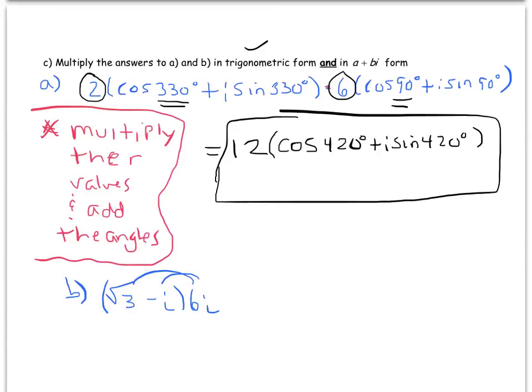So we get 6√3 times i or 6i√3, and then 6i times a negative i. Well, i times i is negative 1, and so with that other negative we'd make it a positive 1 times 6, so plus 6. In standard form we usually write the real part first, so it's 6 plus 6i√3.